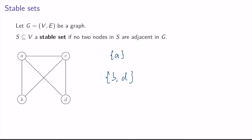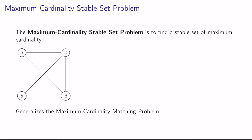And if we leave out A and C, all we are left with are just B and D. The maximum cardinality stable set problem is to find a stable set of maximum cardinality. For this graph, we have already argued that there's no stable set of cardinality 3, and so the stable set {B, D} is a maximum cardinality stable set in this graph.